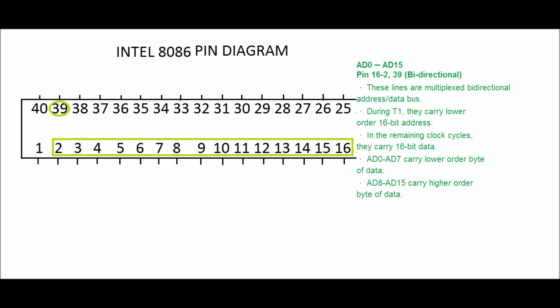In the remaining clock cycles, they carry 16-bit data. AD0 to AD7 carry lower order byte of data. AD8 to AD15 carry higher order byte of data.